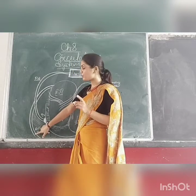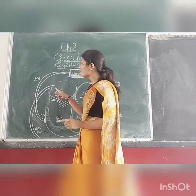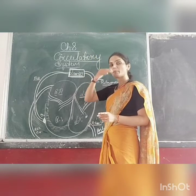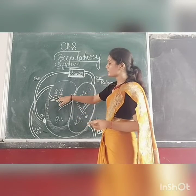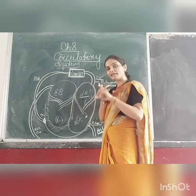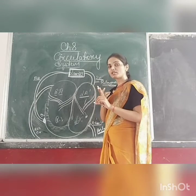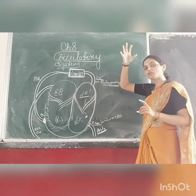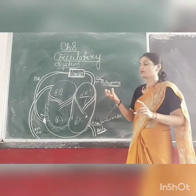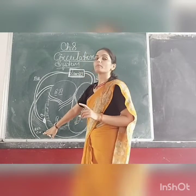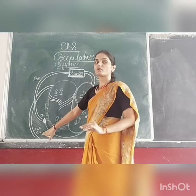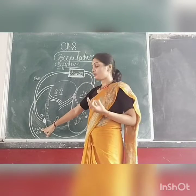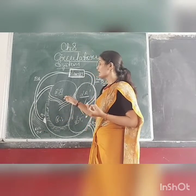What is the anterior vena cava and what is the posterior vena cava? The anterior vena cava brings blood from the upper part of the body to the right atrium. The posterior vena cava brings blood from the lower part of the body to the right atrium. So both vessels open inside the right atrium.